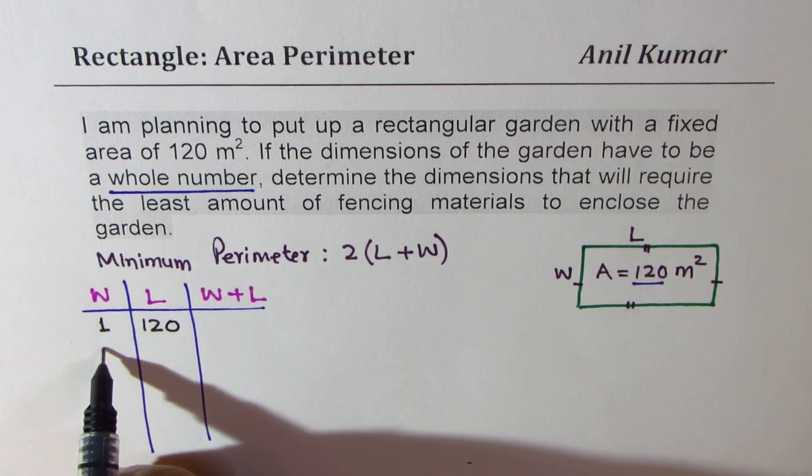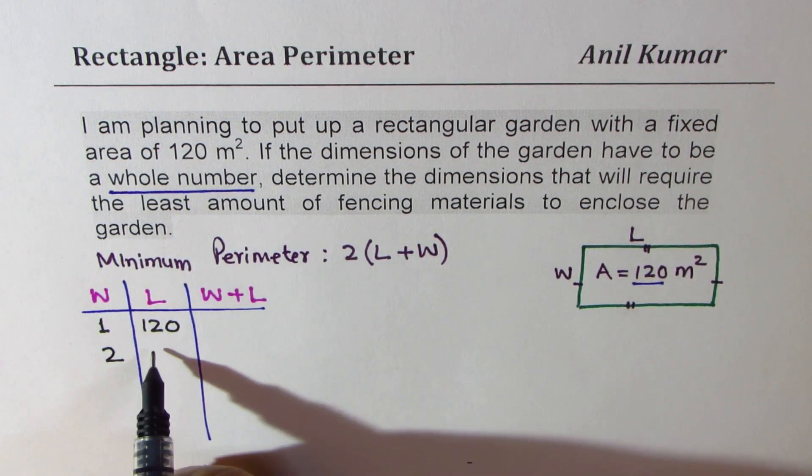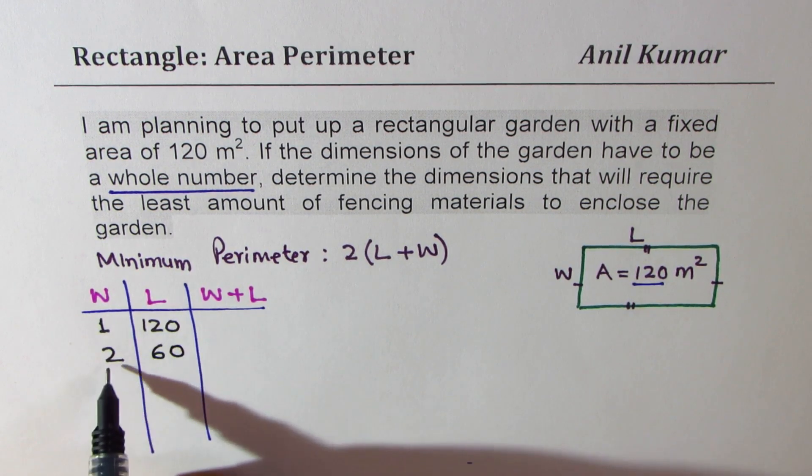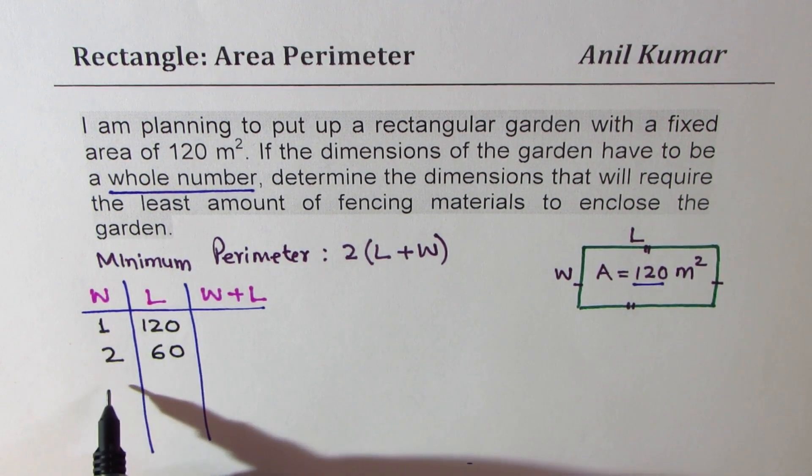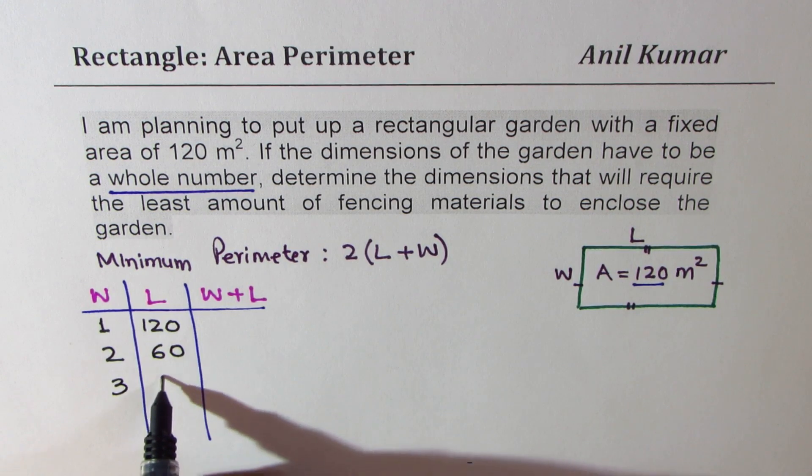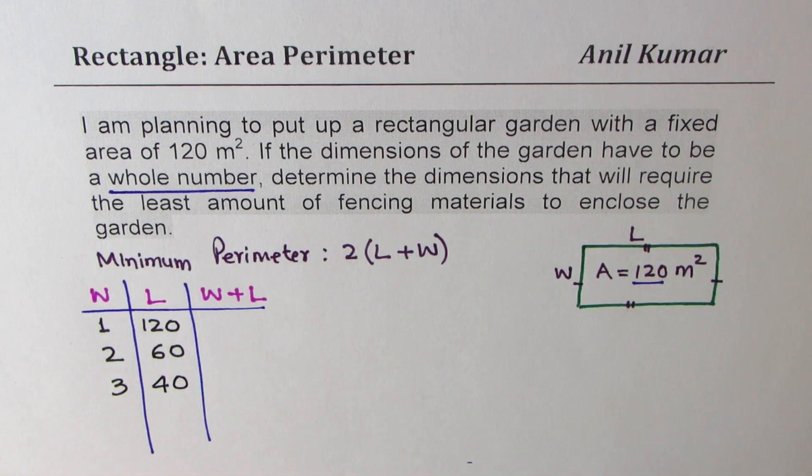If I multiply 1 with 120, I get area of 120. If I multiply 2 by 60, half of this, I again get 120. 3 times 40 will give me 120, and 4 times 30 will give me 120.